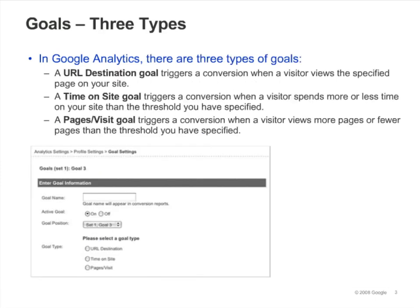There are three types of goals in Google Analytics. A URL destination goal is a page that visitors see once they have completed an activity. For an account sign-up, this might be the thank you for signing up page. For a purchase, this might be the receipt page. A URL destination goal triggers a conversion when a visitor views the page you've specified.